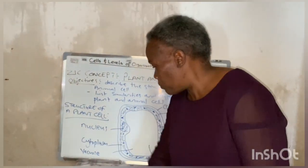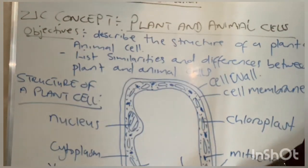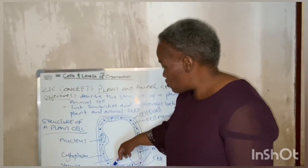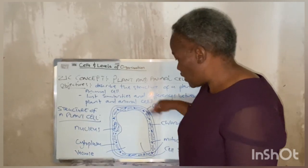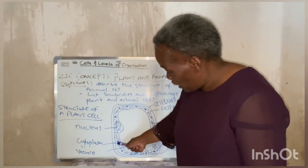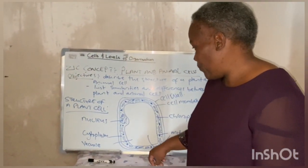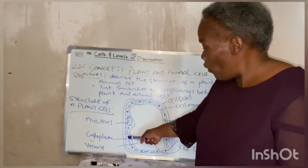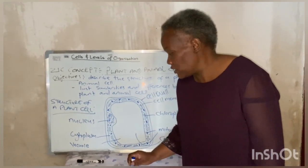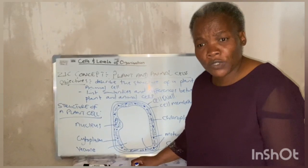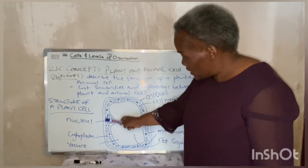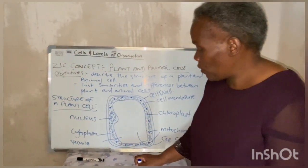We also have the cytoplasm. The cytoplasm is a jelly-like component inside the cell and it contains many of the organelles and other substances. Its main function is that it is the site where all chemical reactions of the cell take place — reactions which are responsible for growth and all that, so all different reactions take place inside the cytoplasm.